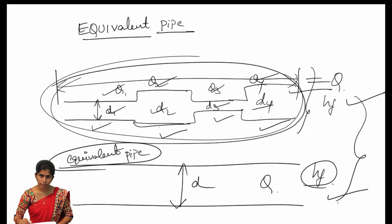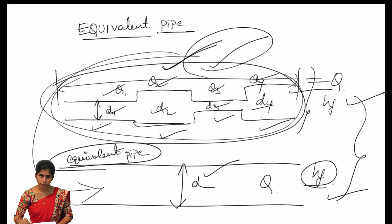In such a way, we have to design the diameter of the equivalent pipe. Equivalent pipe is a pipe of uniform diameter which has the same loss of head and discharge as the compound pipe — whatever discharge and head loss coming from the different compound pipes should be equal to the same discharge and head loss in the equivalent pipe. In such a way, we select the diameter and length of the pipe.